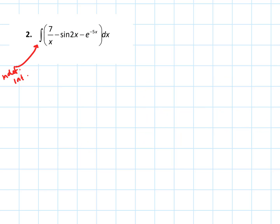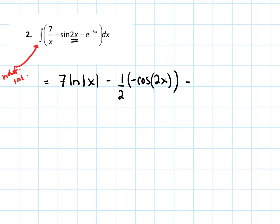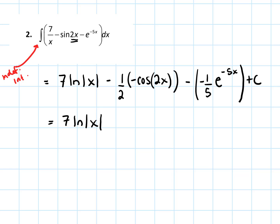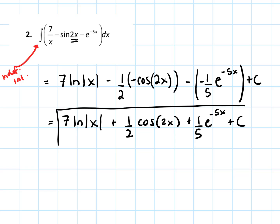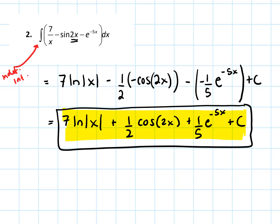So integrating: 7 over x becomes 7 times the natural log of the absolute value of x. For sine of 2x, the k is 2, giving a factor of one-half, and the integral of sine is negative cosine, so we get minus one-half cosine of 2x. For e to the minus 5x, k is minus 5, giving minus one-fifth e to the negative 5x. Simplifying the signs: plus one-half cosine of 2x plus one-fifth e to the minus 5x plus C.